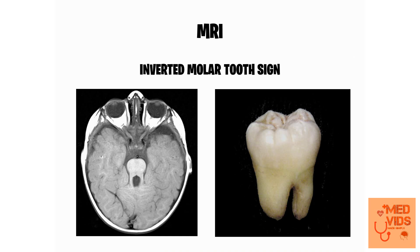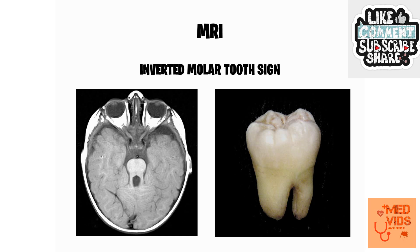The MRI finding of Schubert's syndrome is classically described as the inverted molar tooth sign. As you can see in the picture, in the middle you can see something which looks similar to a molar tooth. This is because of elongation of the superior cerebellar peduncles associated with an abnormally deep interpeduncular fossa, giving the appearance of the inverted molar tooth sign, which is very characteristic of Schubert's syndrome.